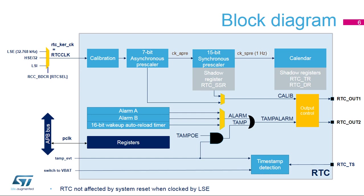The asynchronous pre-scaler can also be bypassed. In this case, the sub-second register resolution is defined by the RTC clock frequency. The RTC has two outputs that can provide the alarm flags, the wake-up timer flag, a calibration output from the pre-scalers, and a tamper detection event. In this figure, the shadow registers belong to the APB clock domain, which is explained later in this presentation.